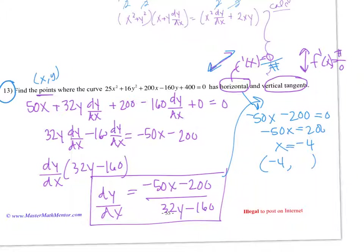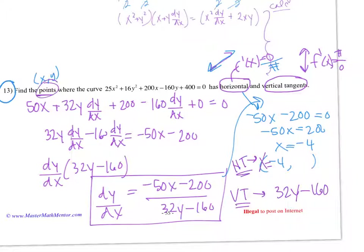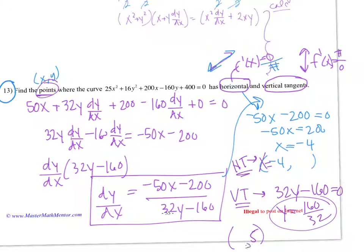For vertical tangents, set your denominator equal to zero. Our vertical tangents happen when 32y minus 160 equals zero, giving y equals 5 — since 160 divided by 32 is 5. So vertical tangents happen when y equals 5. To find the x values, plug y = 5 back into the original equation and solve the resulting quadratic. It may give more than one point, so you could have (something, 5) and (something else, 5).